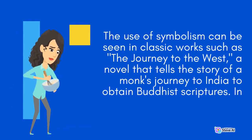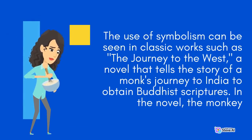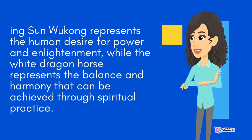The use of symbolism can be seen in classic works such as The Journey to the West, a novel that tells the story of a monk's journey to India to obtain Buddhist scriptures. In the novel, the Monkey King Sun Wukong represents the human desire for power and enlightenment, while the white dragon horse represents the balance and harmony that can be achieved through spiritual practice.